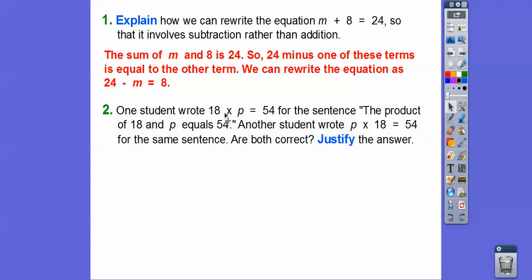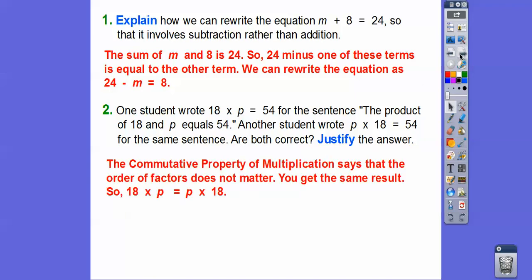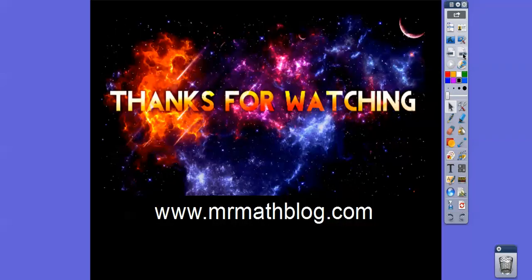One student wrote 18 times P equals 54 for the sentence, the product, product means multiply, of 18 and P equals 54. Another student wrote P times 18 equals 54 for this same sentence right here, the product of 18 and P equals 54. Are they both correct and justified? I'm going to say yes, because the commutative property of multiplication says that 18 times P is the same as P times 18 right there. So both of those are okay by the commutative property of multiplication. All right, you guys, I hope that makes sense and take care. I hope you're having a great year.